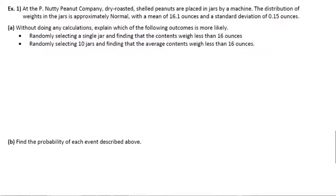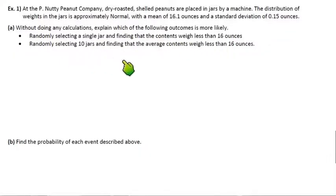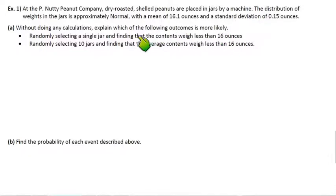Let's take a look at Example 1. Part A: without doing any calculations, explain which of the following outcomes is more likely — randomly selecting a single jar and finding that the contents weigh less than 16 ounces, or randomly selecting 10 jars and finding that the average contents weigh less than 16 ounces. We know the mean of the distribution is 16.1 and the standard deviation is 0.15. So which scenario is more likely: a single jar that weighs less than 16 ounces, or the average of 10 jars weighing less than 16 ounces?